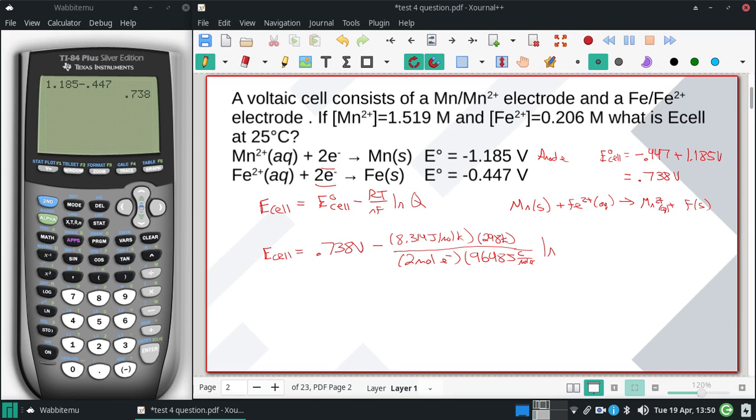Q = [Mn²⁺]/[Fe²⁺] = 1.519/0.206. Before calculating,